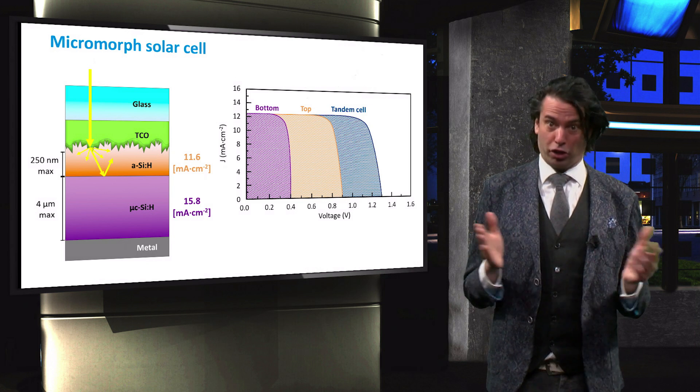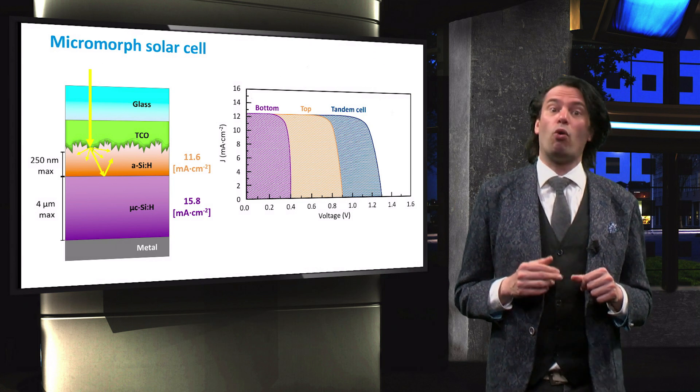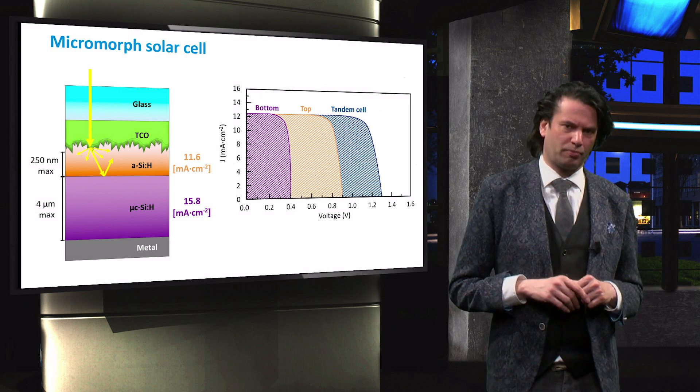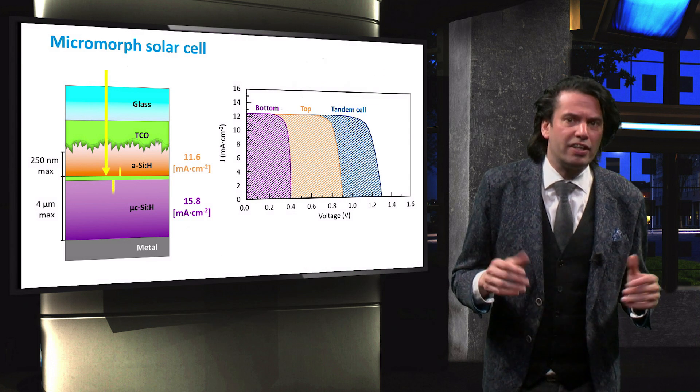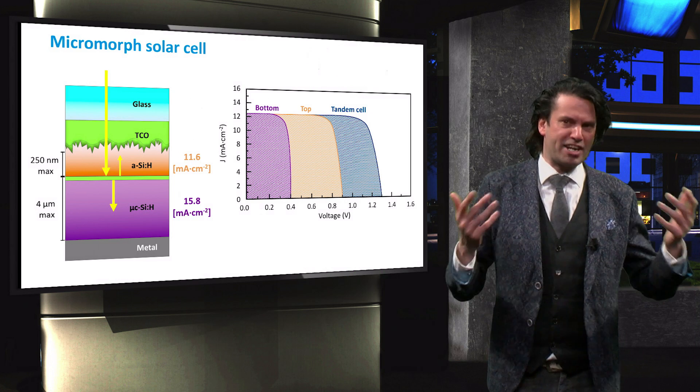To achieve such a current transfer, an intermediate reflective layer or IRL is used. An intermediate reflective layer is a thin layer placed between the top and bottom cell that reflects a fraction of the light back into the top cell.